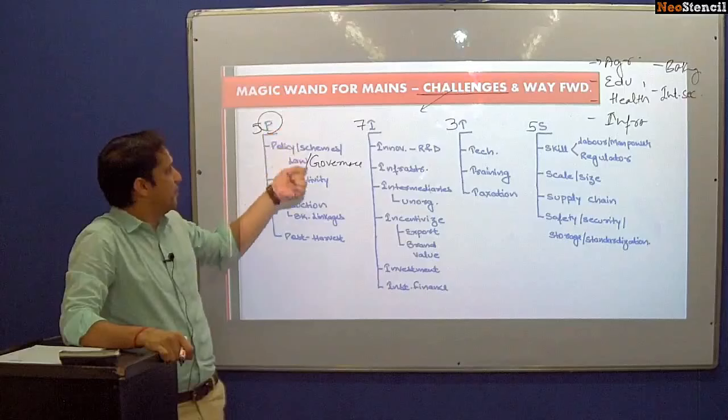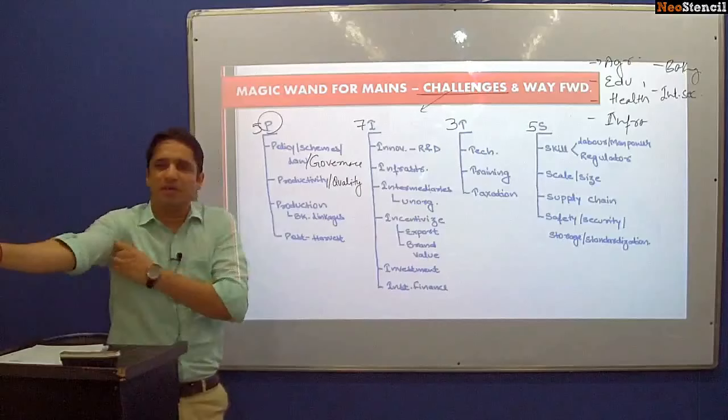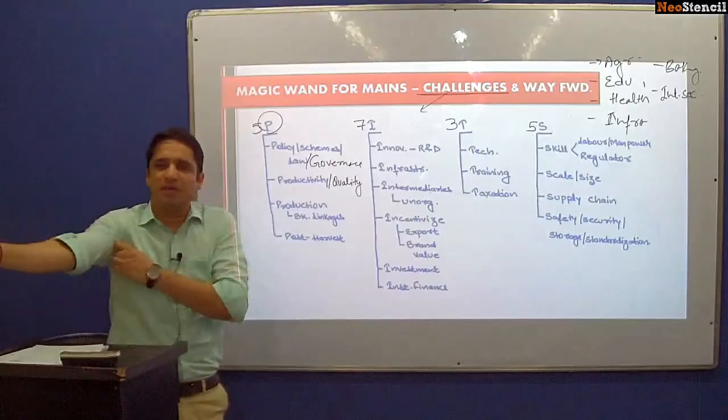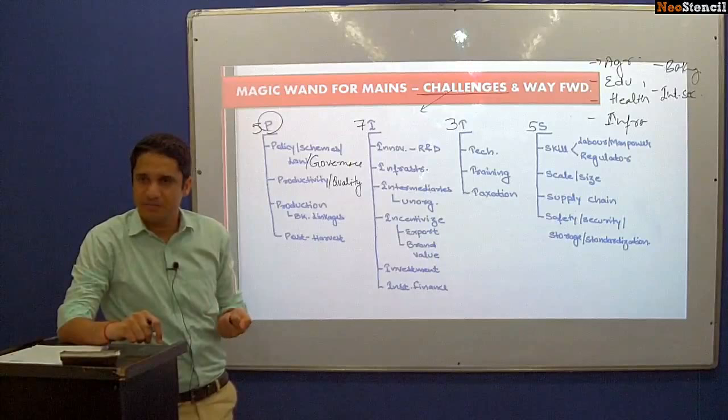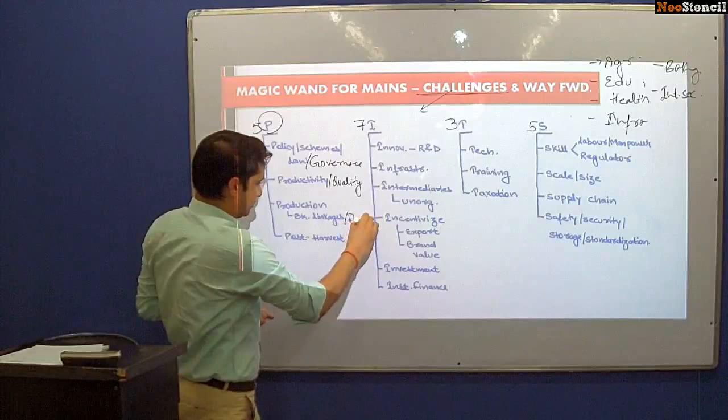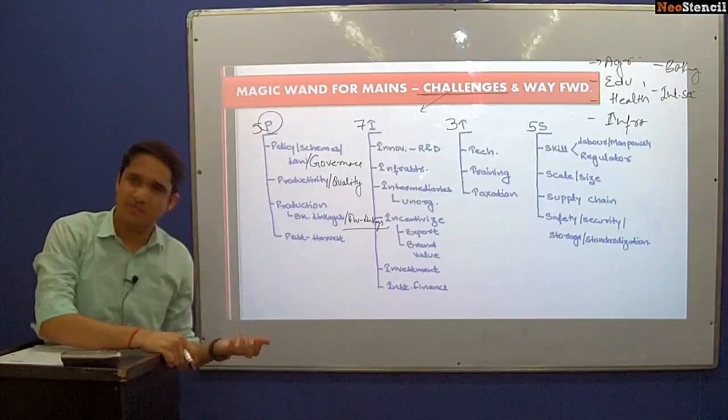The second P is productivity — or we can say the quality of items that we are producing — whether in the horticulture sector or the dairy sector. It is less and is being rejected by international export or trade. The third challenge is production, or we can say backward and forward linkages. This production is a major problem under which both backward and forward linkages are a problem.